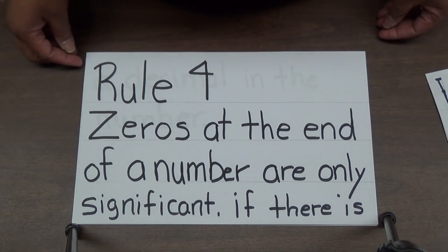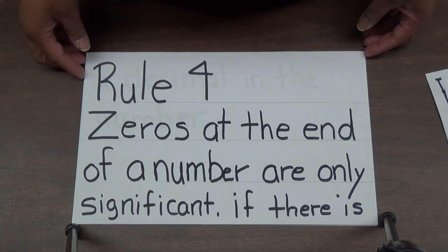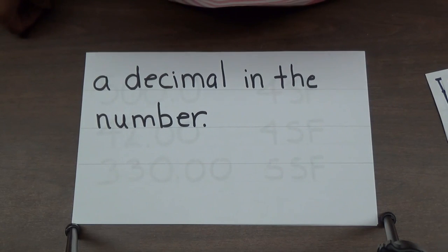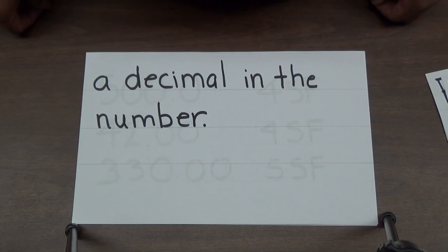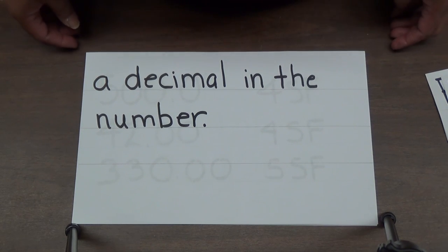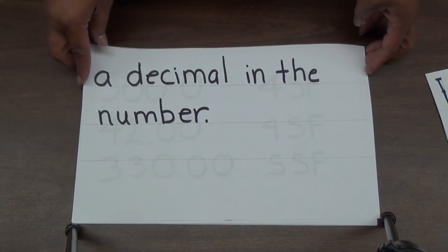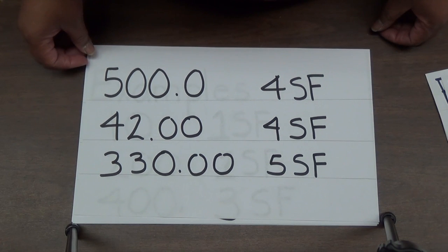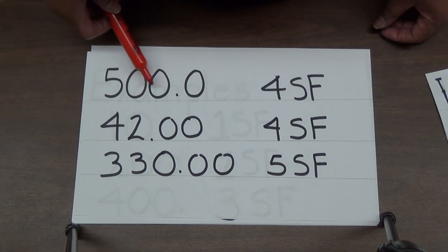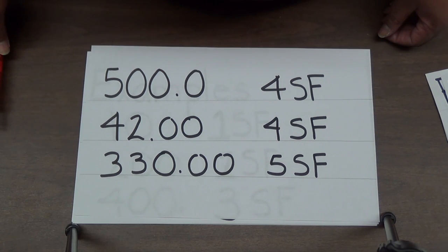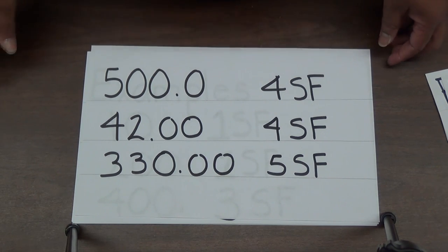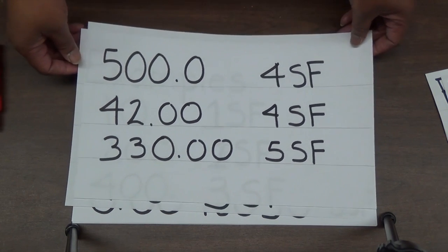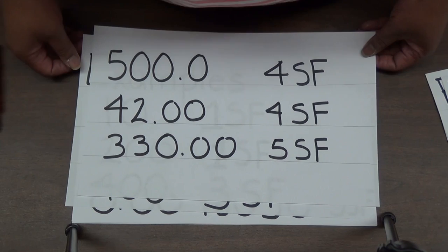Rule number four also deals with zeros. Zeros at the end of a number, sometimes called trailing zeros, are only significant if there is a decimal present in the number — it has to be visible. For example, the number 500.0 has four significant figures because there is a decimal present that makes all the zeros at the end significant. The number 42.00 has four significant figures. The number 330.00 has five significant figures. Again, zeros at the end of a number are only significant if you see a decimal.